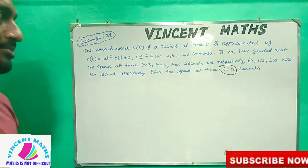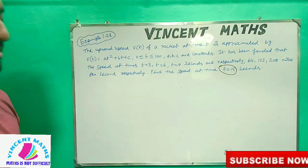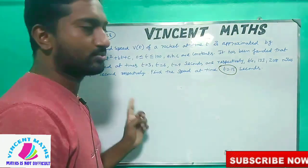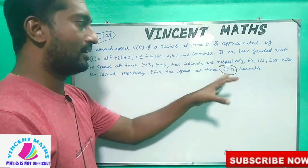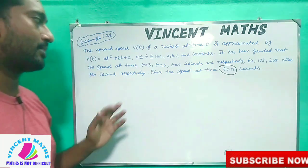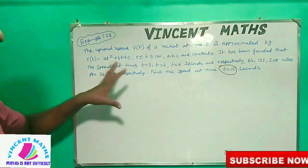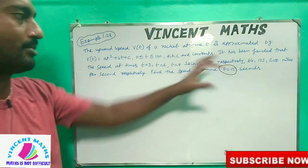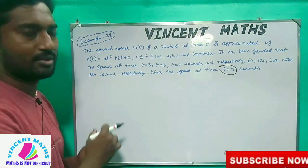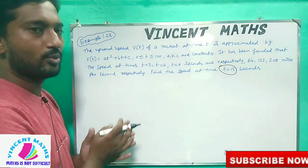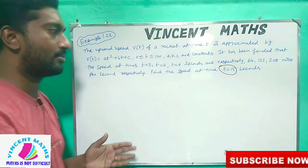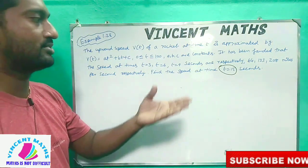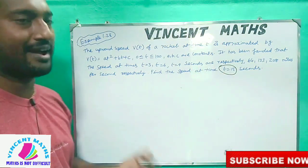So we can see two things: we can find the values of a, b, c, and then substitute the value of t to find the speed. First, if we have t equals 3, 6, and 9, we can set up 3 equations. That is why we apply the Gaussian elimination method to find a, b, c and then get the answer.